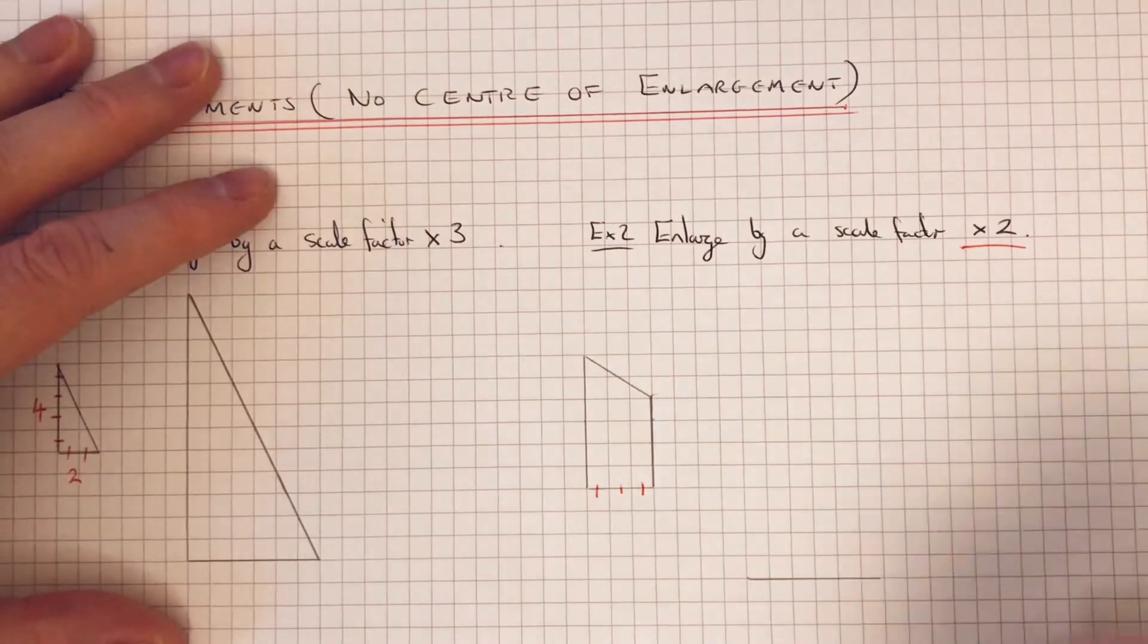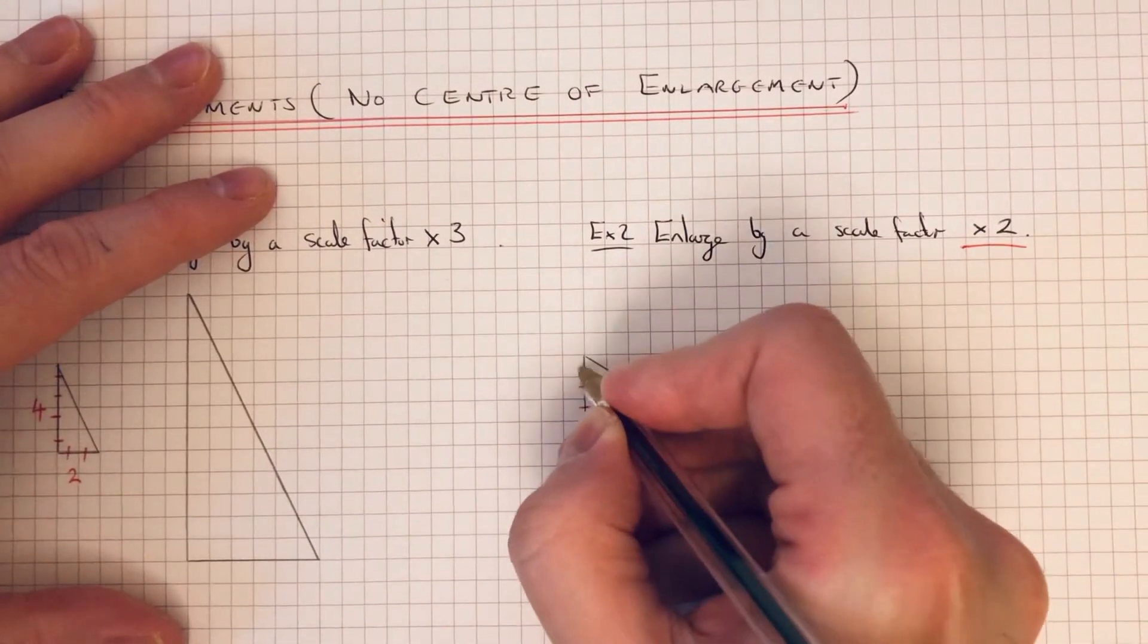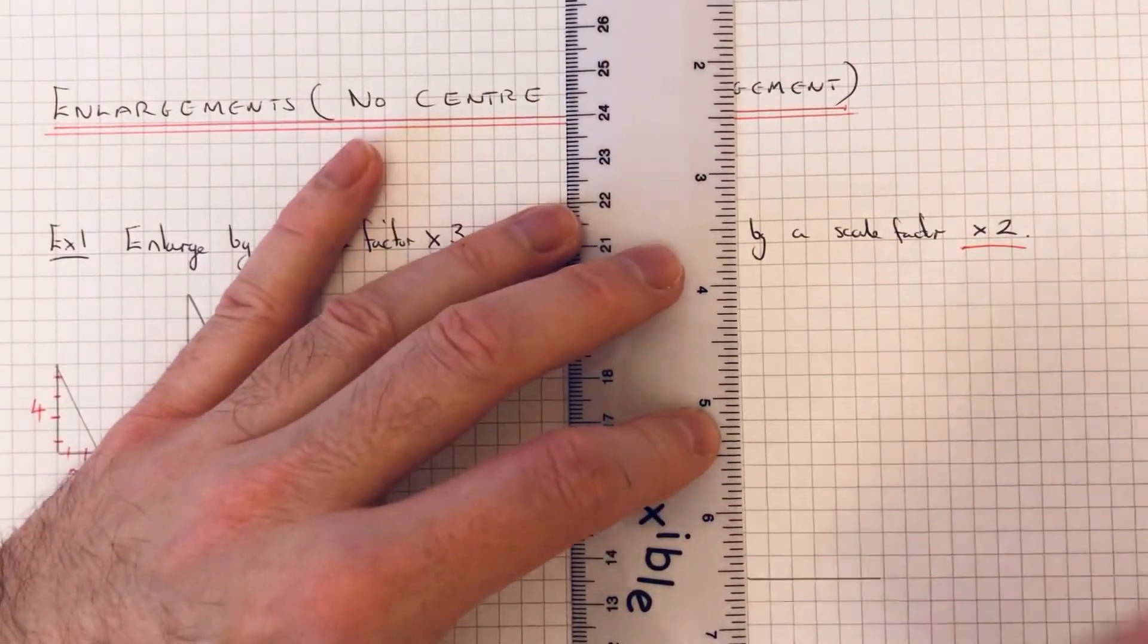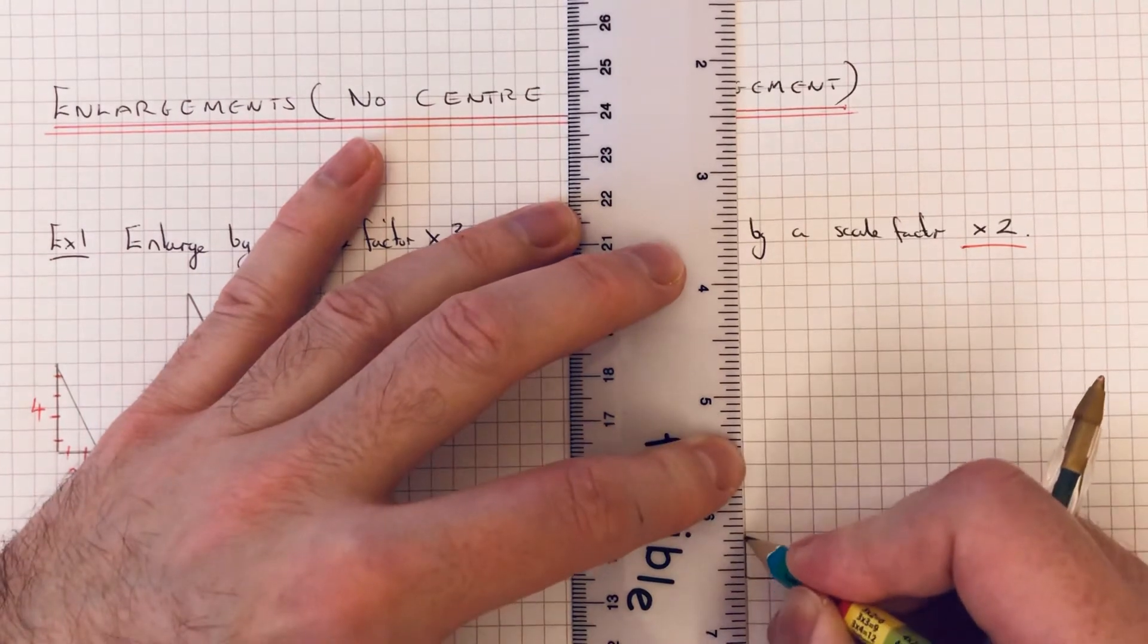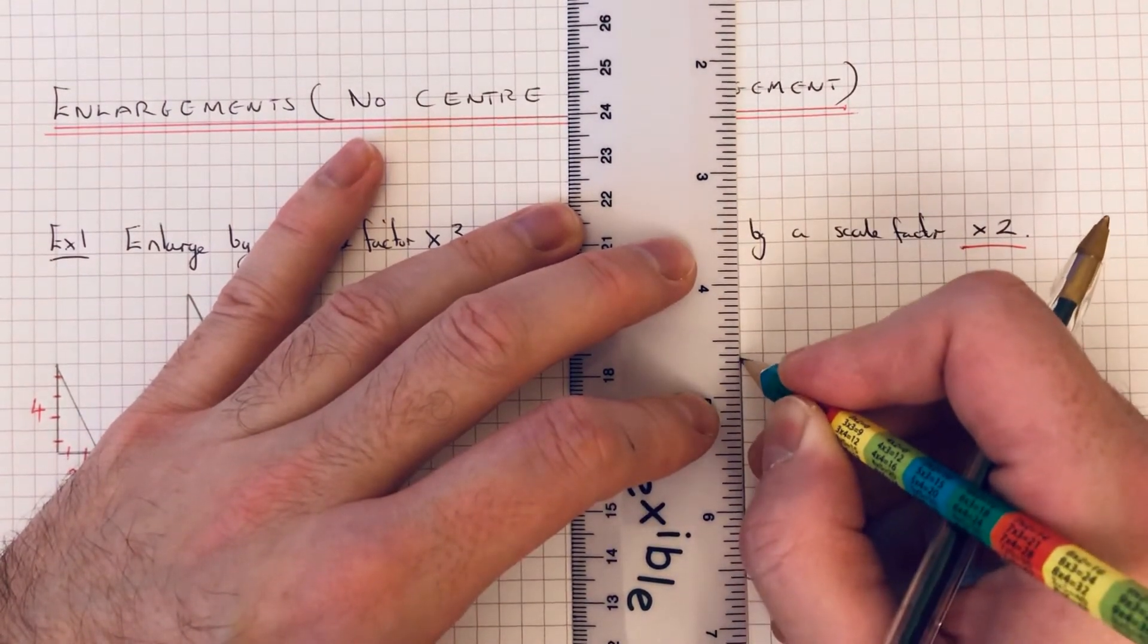Let's do the longest side. So we've got 1, 2, 3, 4, 5, 6. So 6 doubled is 12. That's 12 squares up: 2, 4, 6, 8, 10, 12.